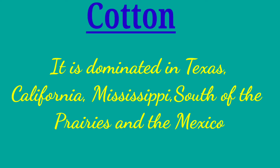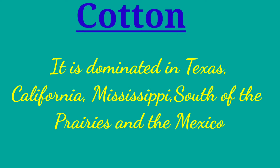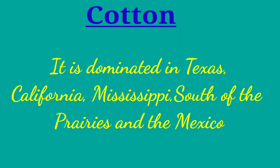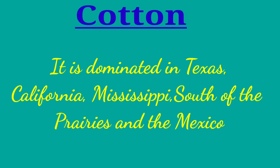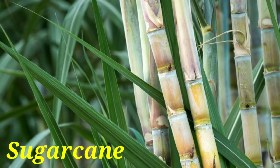Warm summers with frequent rainfall and fertile soil are favorable conditions for the growth of cotton. The next one is sugar cane. Sugar cane is cultivated along the Gulf of Mexico, parts of Central America, and the West Indies. It is an important cash crop of the West Indies.